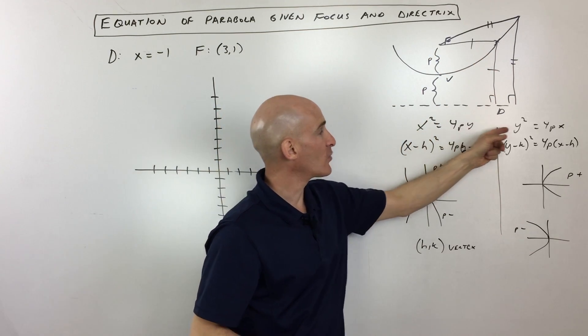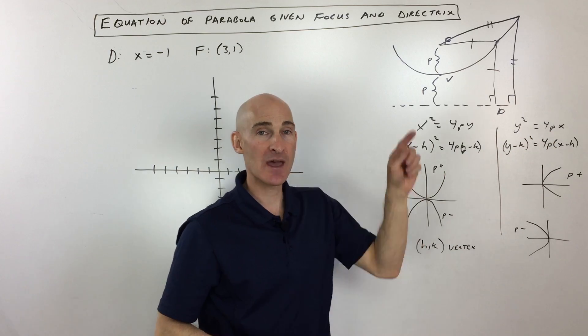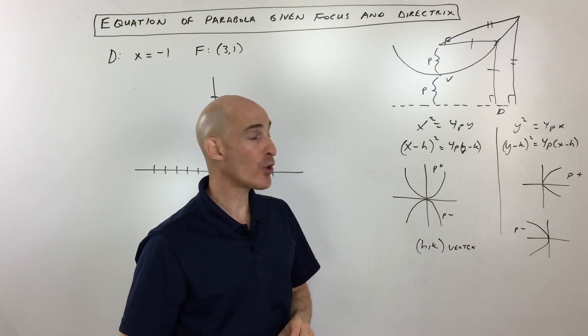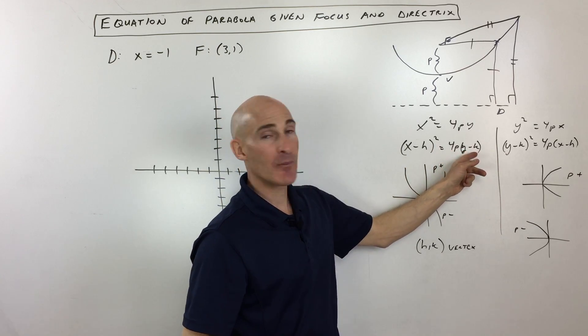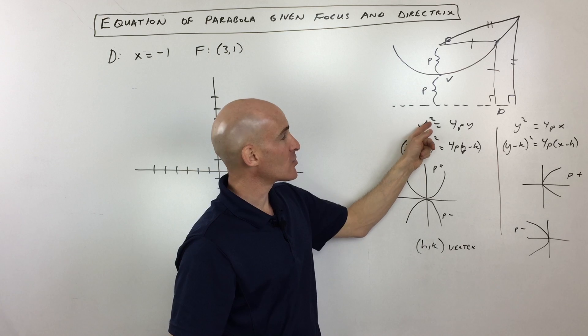Now the thing to realize is that parabolas can be picked up and shifted left and right, up and down. The way I've written the equation here, this is where the vertex or that bending point, that turning point, is at the origin. But you can see the h and k can shift the graph left and right, up and down.